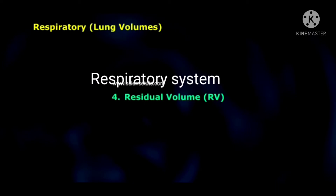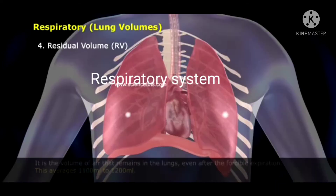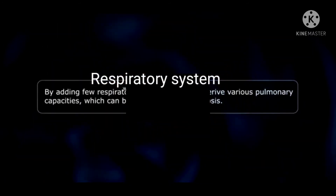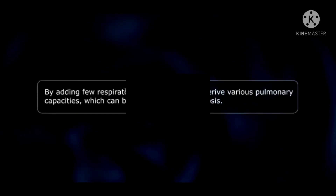The last lung volume is residual volume. It is the volume of air that remains in the lungs even after a forcible expiration. This averages 1,100 ml to 1,200 ml.